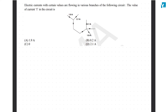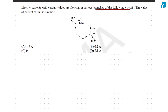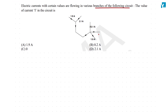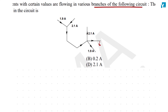Electric currents with certain values are flowing in various branches of the circuit. We need to find the value of current i — this is the one in question, and it is the only unknown one.